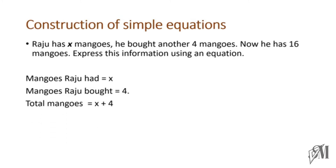Now, the total number of mangoes Raju has can be written as x plus 4. In the statement it is already given that now he has 16 mangoes. So what we have to do is equate x plus 4 to 16 and make an equation. So here we go — this is the answer for this statement.